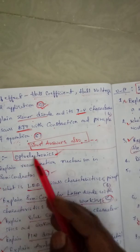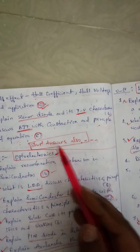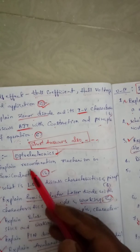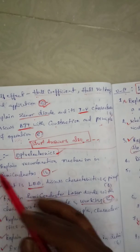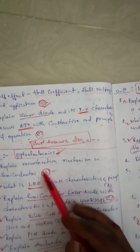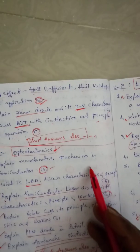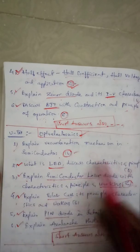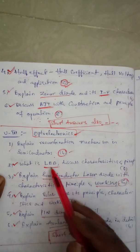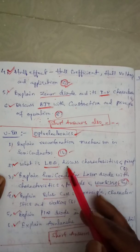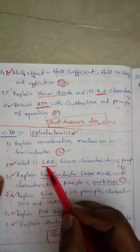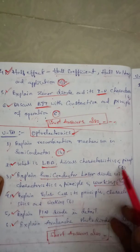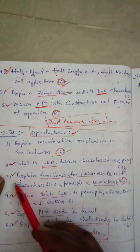Now Unit 3 is Optoelectronics, which is a small branch of semiconductor physics. The first question is 'Explain the recombination mechanism in semiconductors,' carrying six marks. The second question is 'What is an LED? Discuss its characteristics and principles' — very very important, asked many times in examination, carrying six marks.